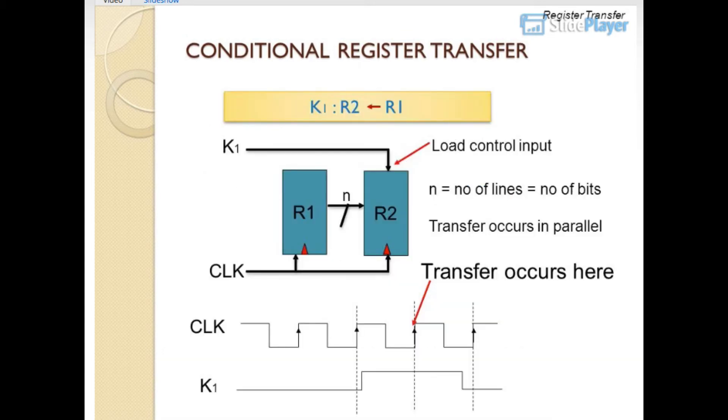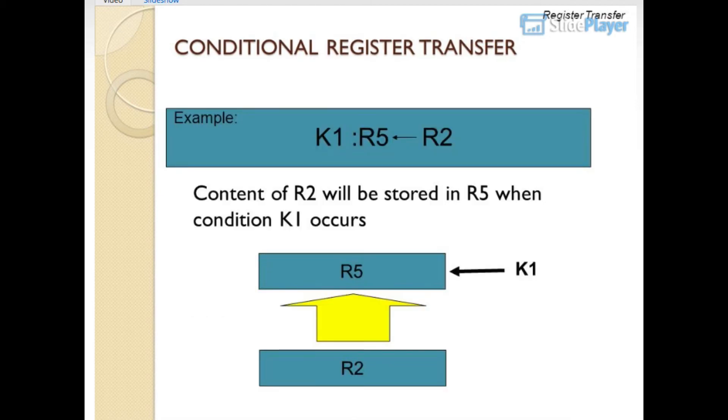Conditional register transfer: K1: R2 gets R1. The circuit has R1 connected to R2 with N lines, where N equals number of bits. K1 is the load control input connected to the clock. Transfer occurs in parallel when K1 is active at the clock edge.